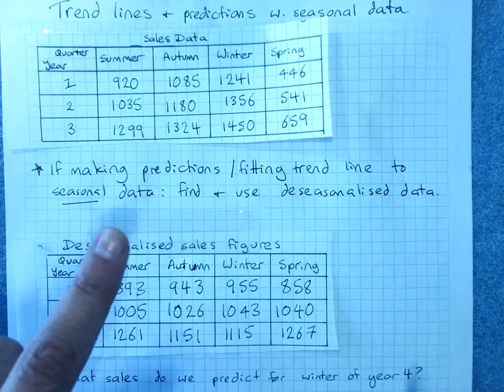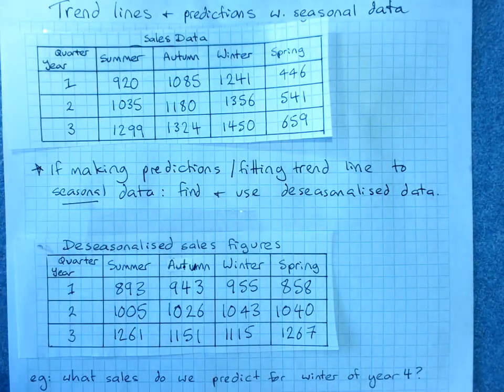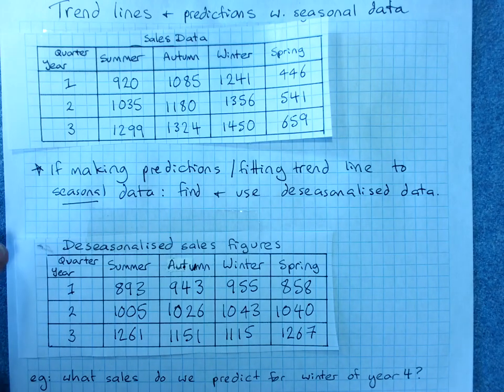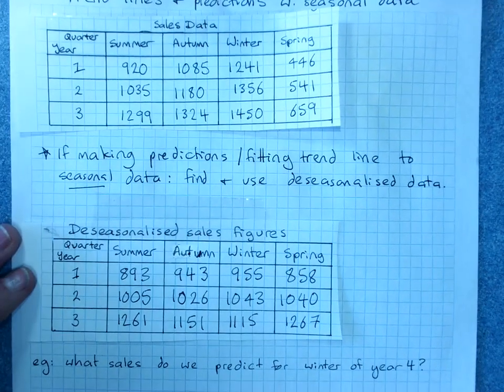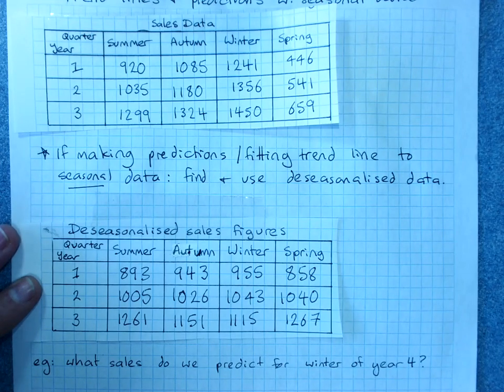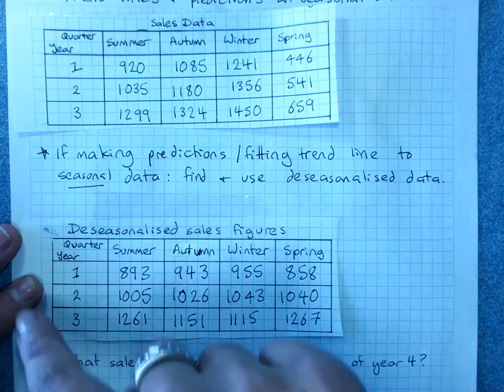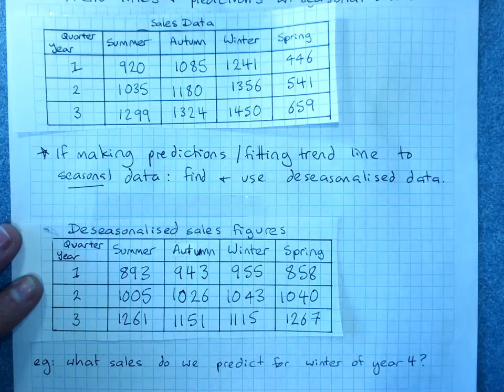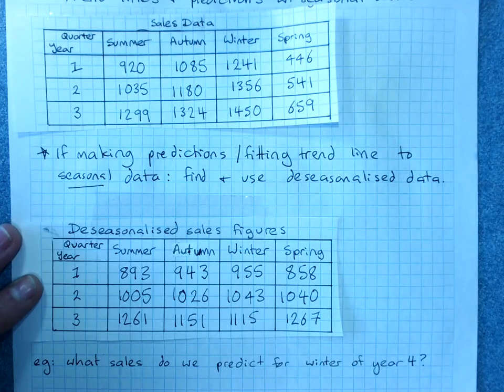Because this lets us look at the trend more accurately, and the trend line doesn't work well with a very curvy set of data. It will work much better with a more linear set of data.